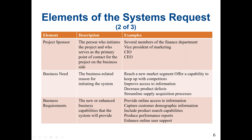The business requirements are the new or enhanced business capabilities that the system will provide. For example, a system that currently manually prepares payroll or manually keeps inventory may be computerized or automated to improve the capability of business operations. Examples include providing online access to information, capturing customer demographic information, including product search capabilities, producing performance reports, and enhancing online user support.